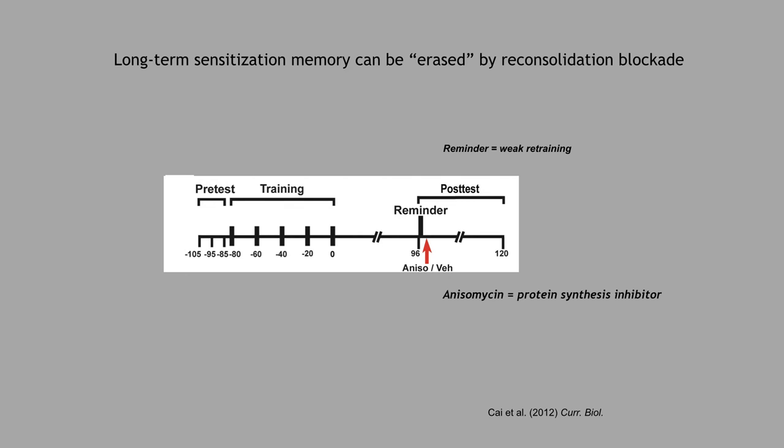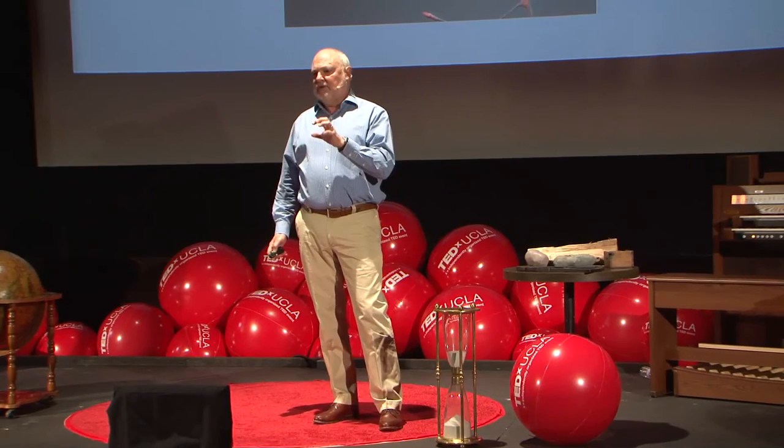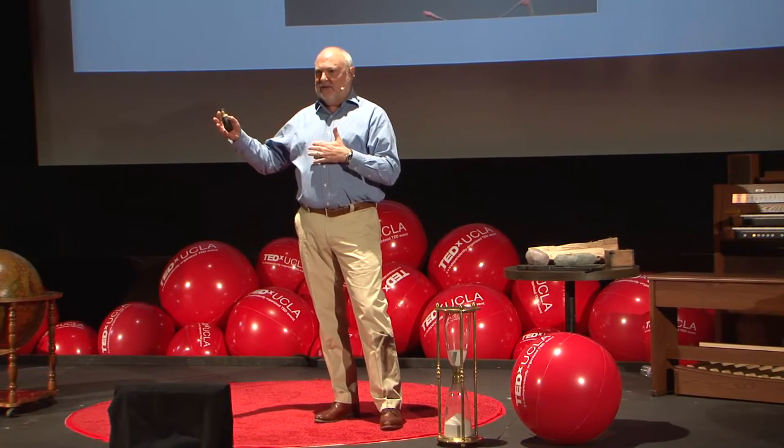We used this to see if we could erase the memory in the snail. We trained it with a series of electrical shocks, then gave a reminder stimulus — a single electric shock that produces only short-term memory, not long-term. When we gave the reminder and then injected a protein synthesis inhibitor into the snail, the sensitization was eliminated. This is similar to the fear conditioning studies in rats — we had apparently removed the memory. So we next asked: if we remove the memory, are the synapses gone?